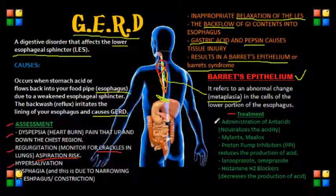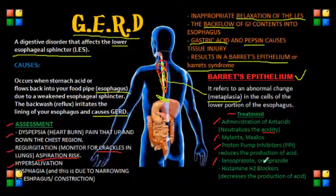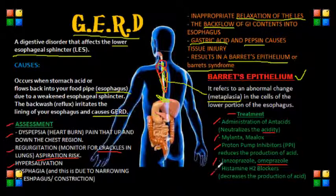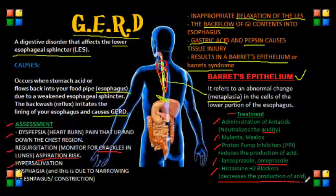For treatment, we can administer antacids, which neutralize the acidity in the stomach — examples include Mylanta and Maalox. We can also give patients PPIs, or proton pump inhibitors, which reduce the production of acid. Common PPI drugs include lansoprazole and omeprazole.